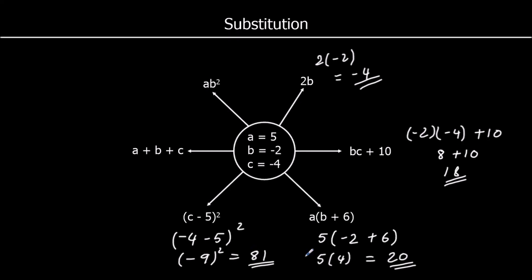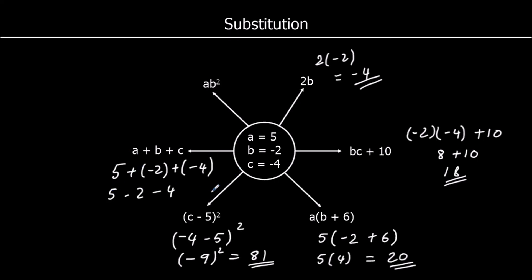a plus b plus c. So 5 plus negative 2 plus negative 4. This is the same as 5 minus 2 minus 4. 5 minus 2 is 3, and 3 minus 4 is negative 1.